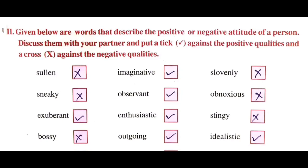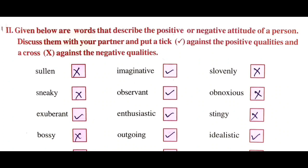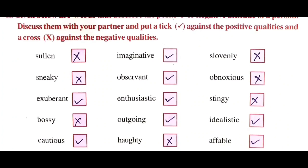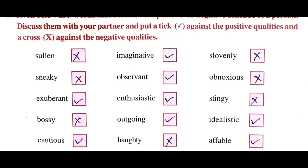Here is yet another exercise. Given below are words that describe the positive or negative attitude of a person. Discuss them with your partner and put a tick mark against the positive qualities and a cross against the negative qualities. The first one is 'sullen' - sullen means bad temper or depressive mood, being unhappy. This is a bad quality. Next: 'imaginative' means having imagination skills. This is a positive quality - put the tick mark.